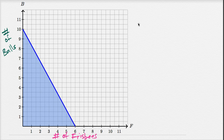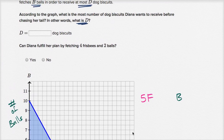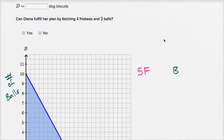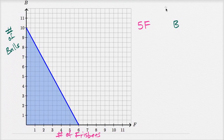The total from catching frisbees: if she catches f frisbees, she gets five biscuits per frisbee, so the total from frisbees is 5f. And if she retrieves b balls, she gets three biscuits per ball, so the total from balls is 3b. The total number of dog biscuits she gets is 5f plus 3b.